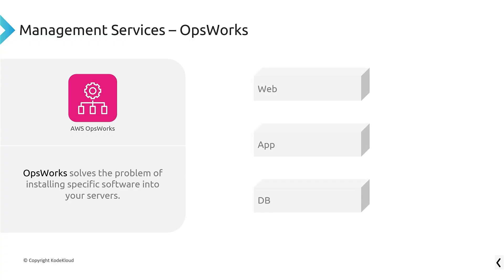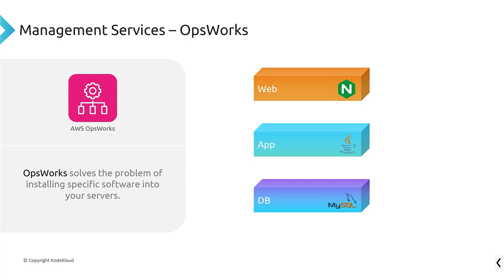OpsWorks allows you to install software at the web level, the app level, the database level — any level you want to define. A word of warning: CloudFormation can also be used to install software into servers, but it wasn't really built for that. Similarly, OpsWorks can also create and provision AWS services, but it's not great at doing CloudFormation's job. Mainly, remember that CloudFormation is for provisioning AWS services, and OpsWorks is for installing software into virtual machines or containers.